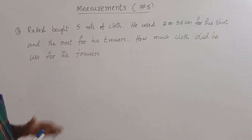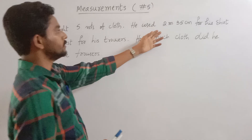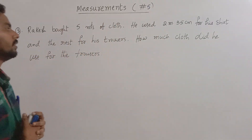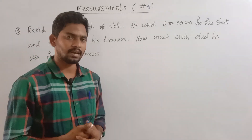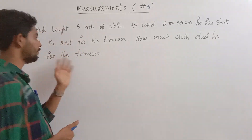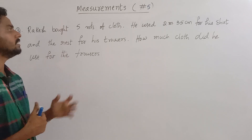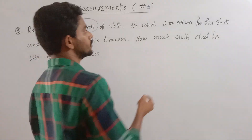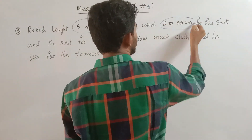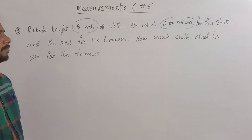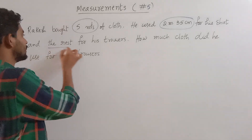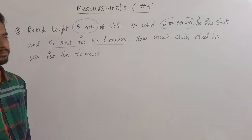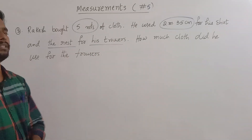Rock bought 5 meters of cloth. He used 2 meters and 35 centimeters for his shirt and the rest for his trousers. How much cloth did he use for the trousers?